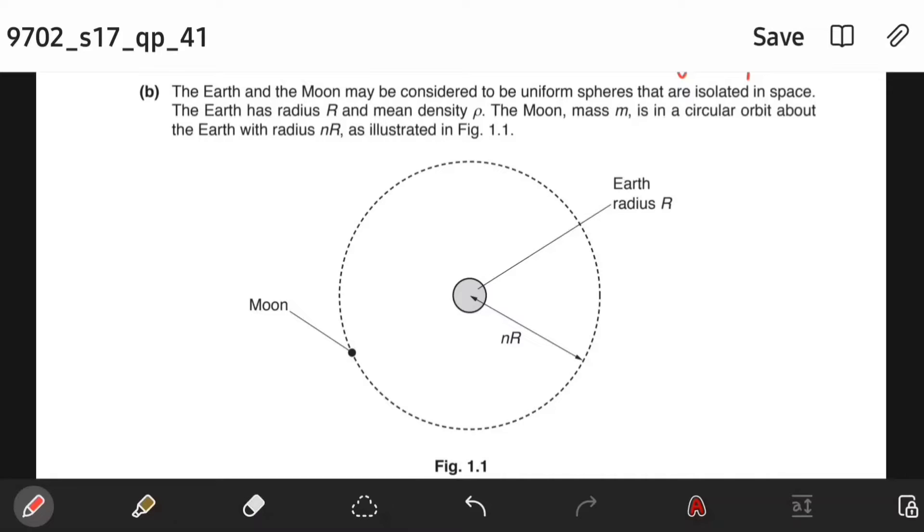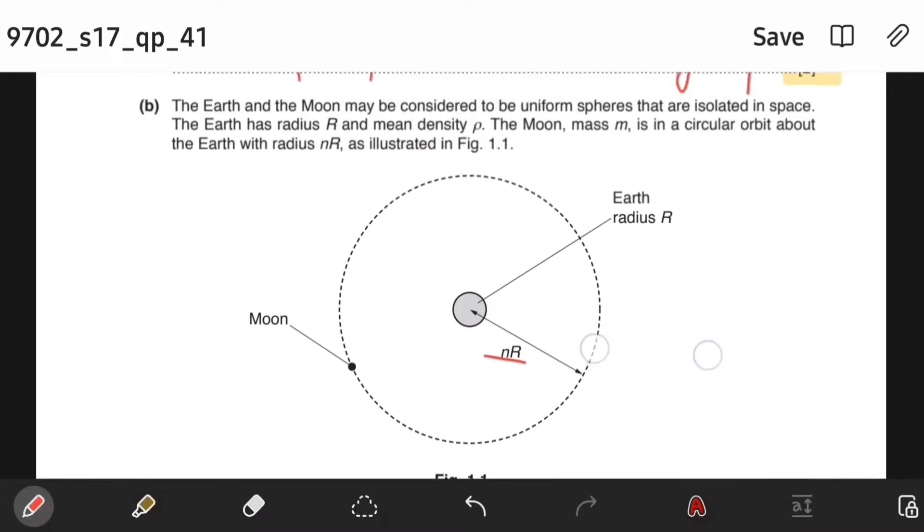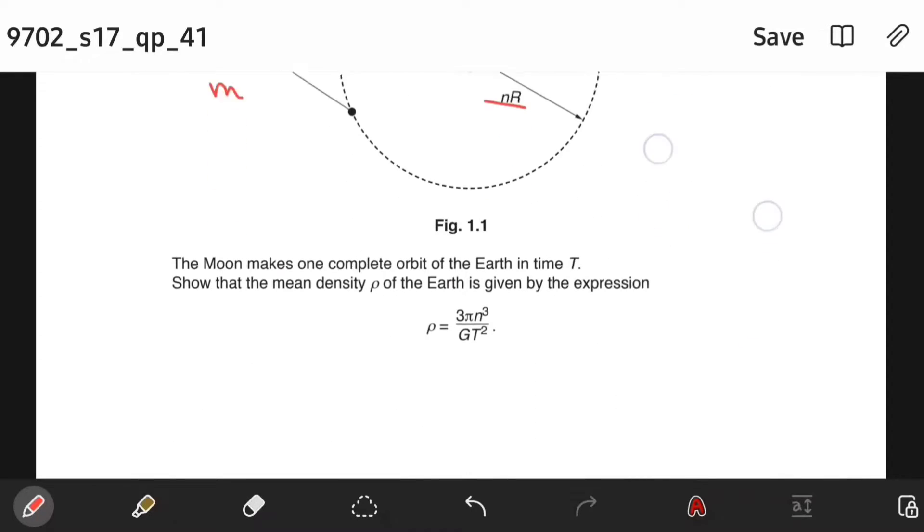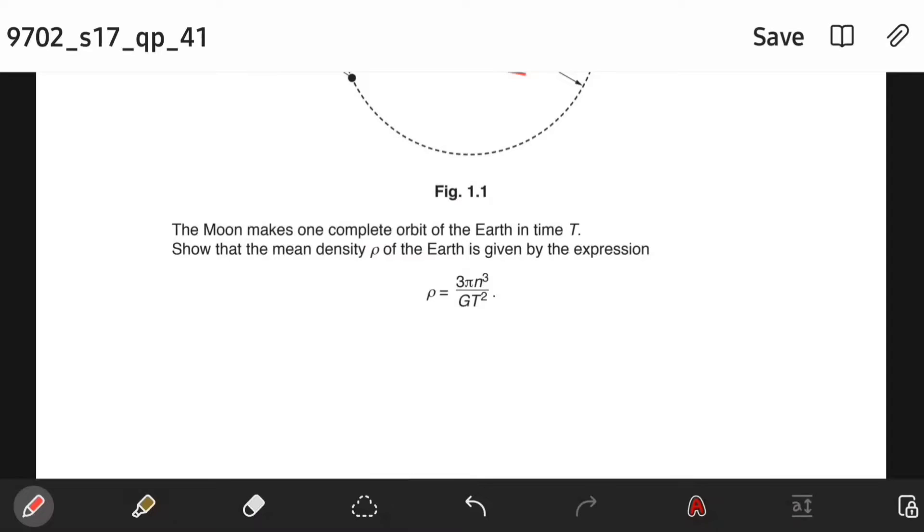Part B. The earth and the moon may be considered to be uniform spheres that are isolated in space. The earth has radius R and mean density rho. The moon mass m is in circular orbit about the earth with radius nR, as illustrated in figure 1.1. The moon makes one complete orbit of the earth in time T. Show that the mean density rho of the earth is given by the equation.